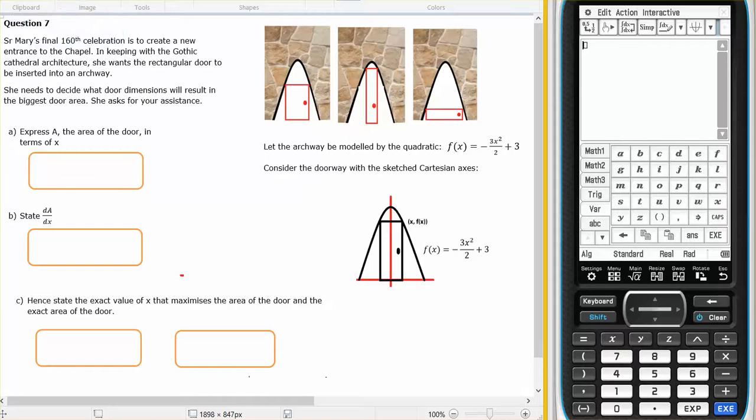This is for Year 12 Methods. It comes out of the Chapter 9, 10 topic test, question number 7. Sister Mary's final 160th celebration is to create a new entrance into the chapel. In keeping with Gothic cathedral architecture, she wants a rectangular door to be inserted into an archway.